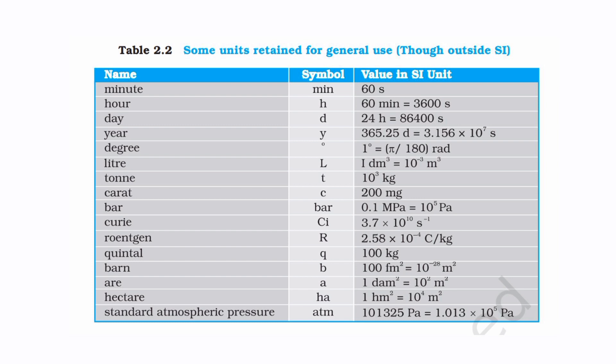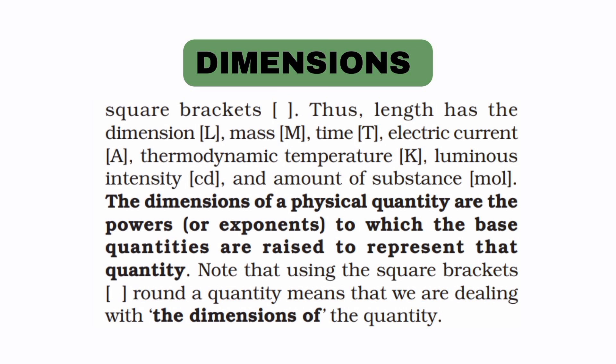Some units are retained for general use though outside SI. SI units include fundamental and supplementary units. Now we come to Conversion — converting one unit to another, such as meter to kilometer or kilogram or second to minute. The next topic is Dimension. The definition: the dimensions of a physical quantity are the powers to which the base quantities are raised to represent that quantity.